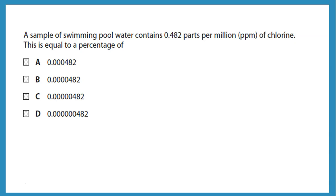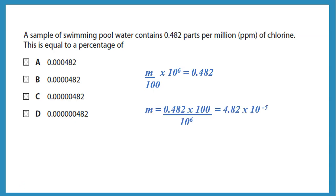A sample of swimming pool water contains 0.482 parts per million of chlorine. We are already given the parts per million and asked what is the percentage of this substance. Percentage means total is 100 grams, and we find the mass in 100 grams of the swimming pool water. So: mass over 100 times 10 to the 6 equals the parts per million given. Rearranging, the mass equals 0.482 times 100 over 10 to the 6, which gives 4.8 times 10 to the minus 5 grams.